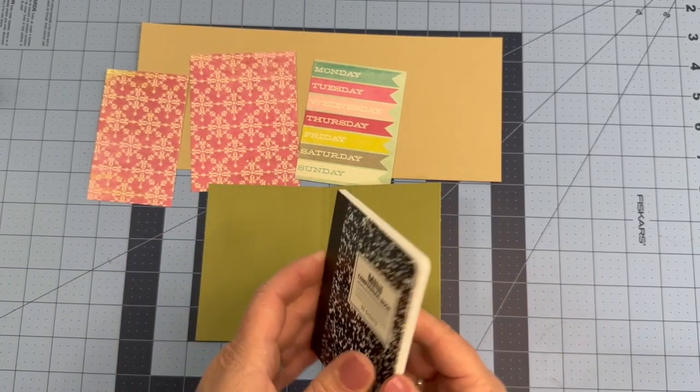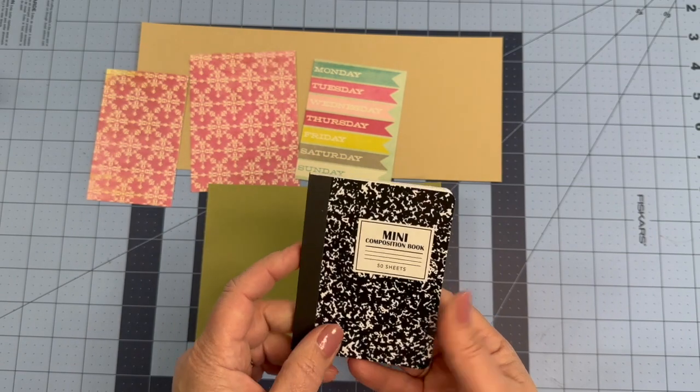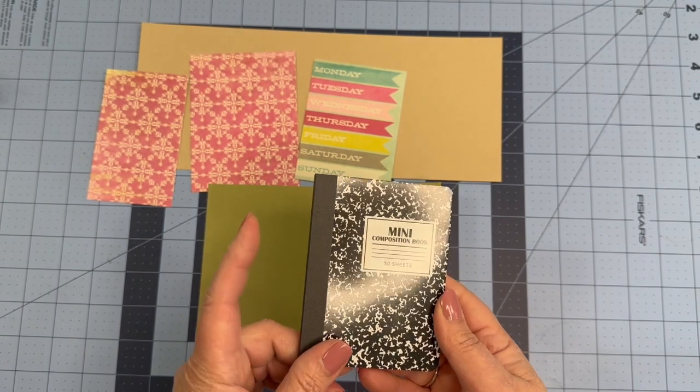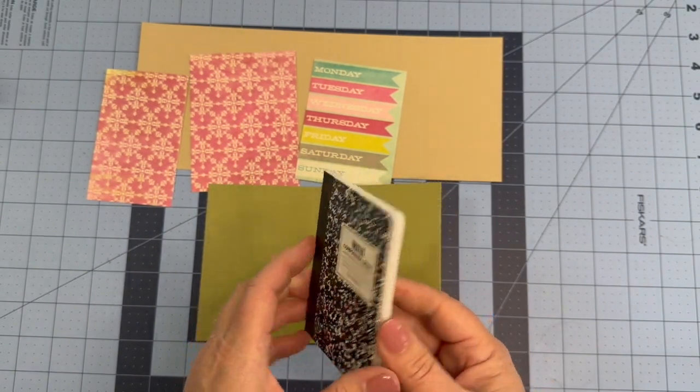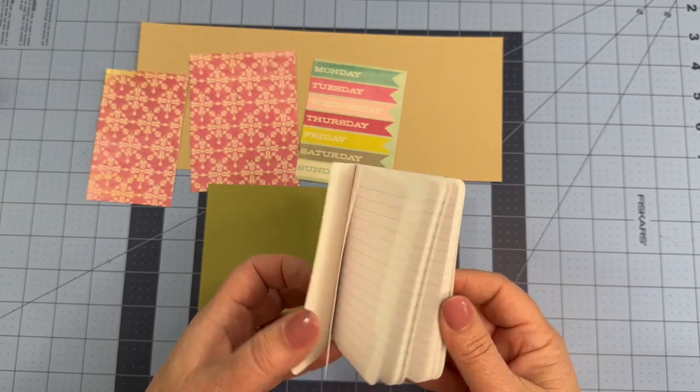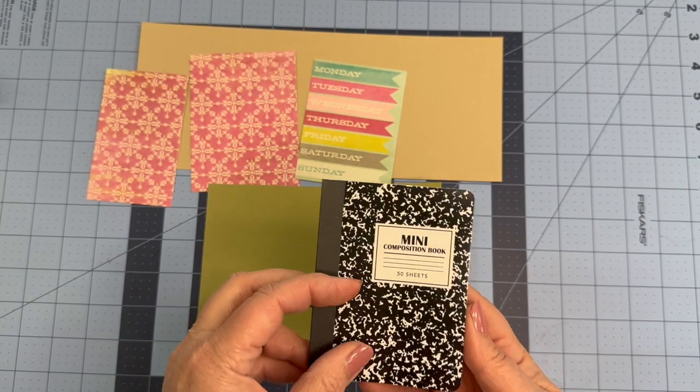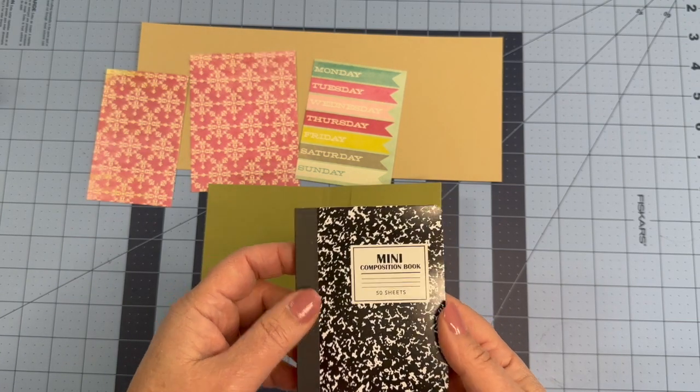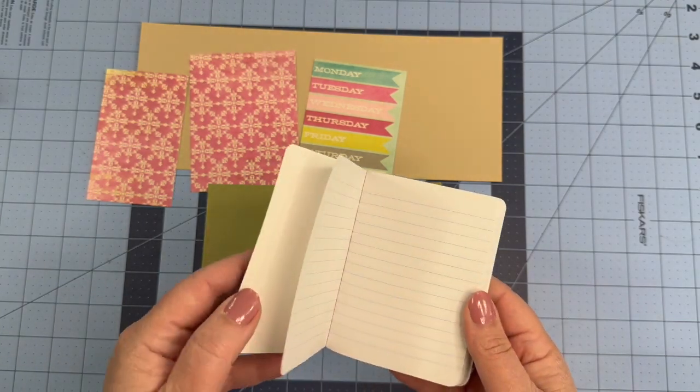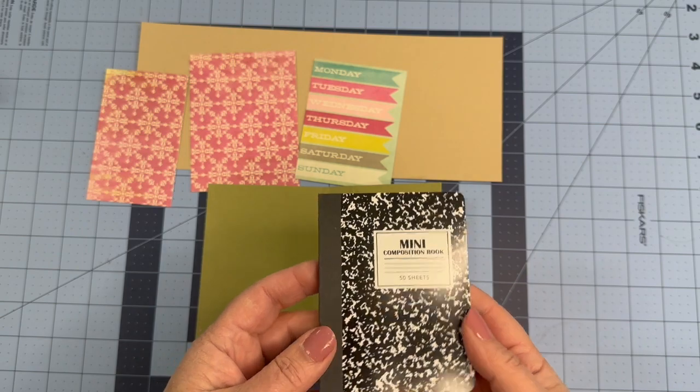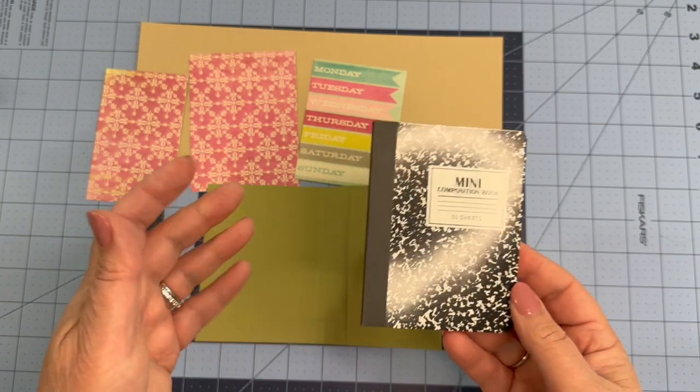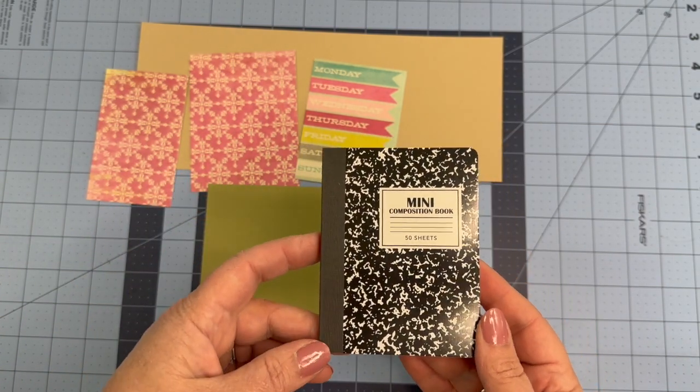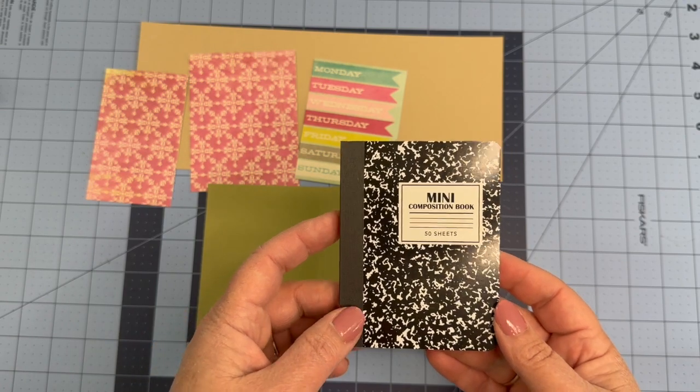I bought these composition books in packs of three at the dollar store for $1.25. They have 50 sheets inside. They're a great little mini book just to write a note down, scratch down a phone number, make a quick grocery list, what have you. They're the perfect size for putting in your purse.